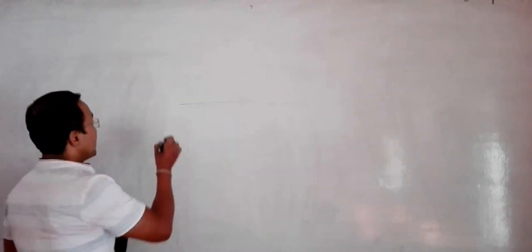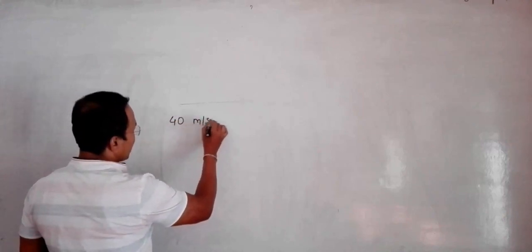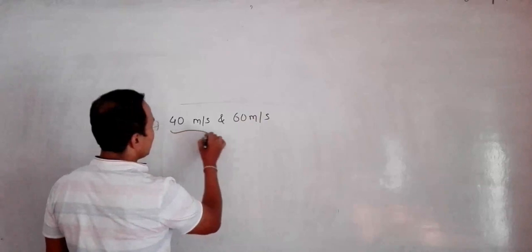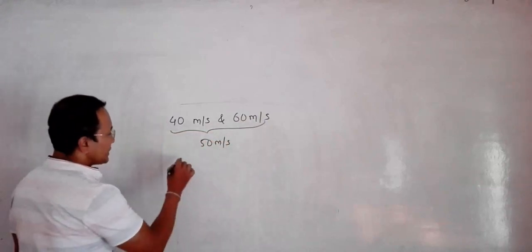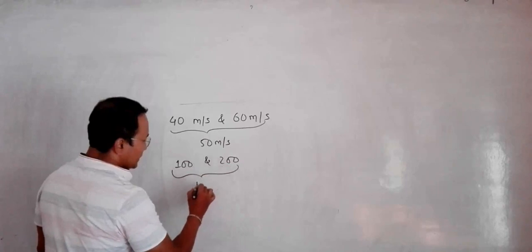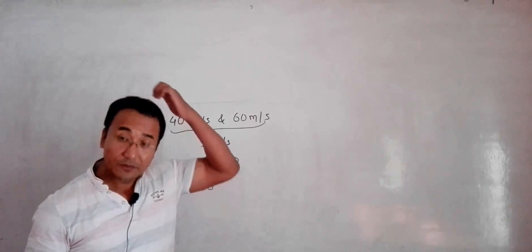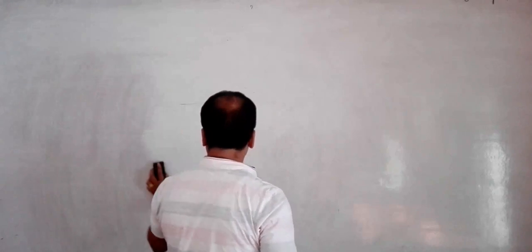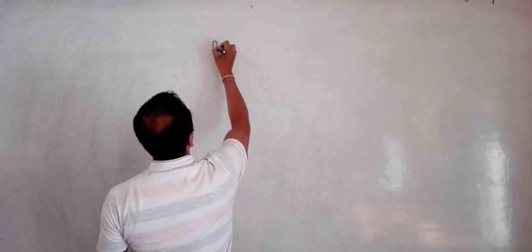I have a question: when we talk of average velocity or average speed, the thing that comes to mind is simple arithmetic. If we need to find the average of 40 m/s and 60 m/s, we get 50 m/s. Or if we have 100 and 200, we get 150. But in kinematics and real life, things are not always the same.